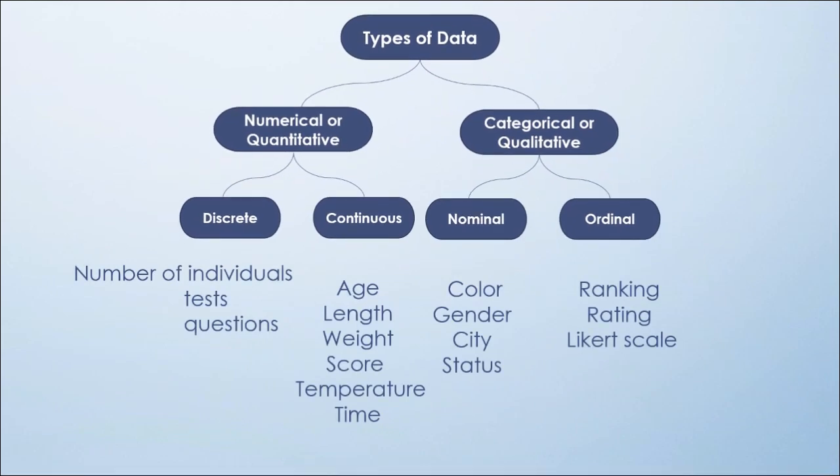Here are some examples of each subcategory. For example, number of individuals or tests are discrete data. Age, length, and time are continuous data. In contrast, color and gender are nominal data, but Likert scale and ranking are ordinal data.